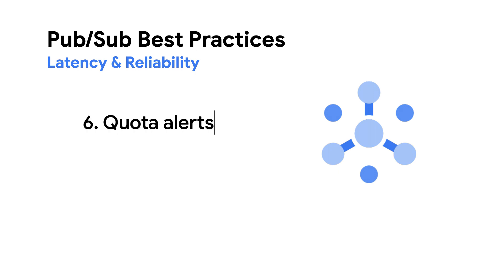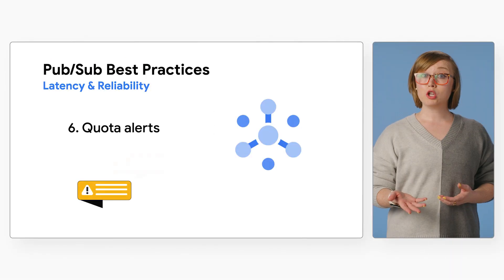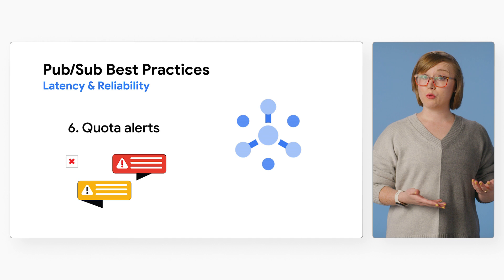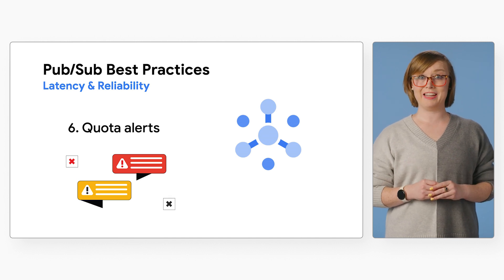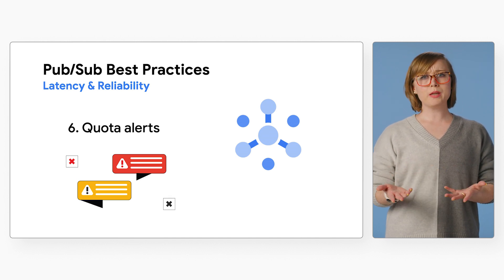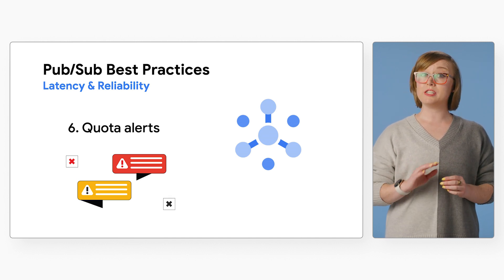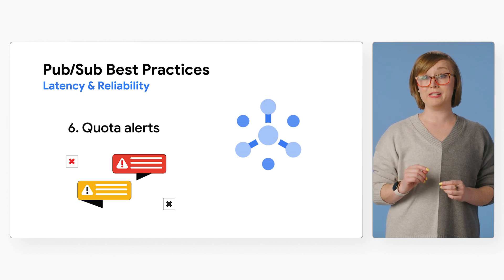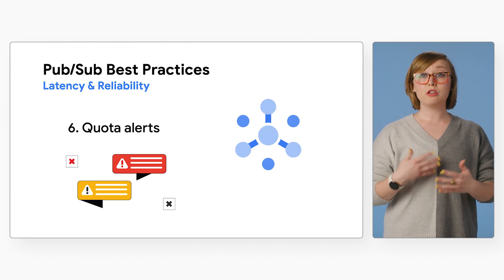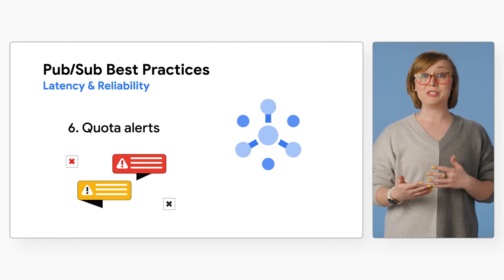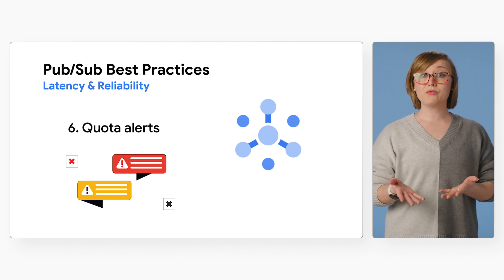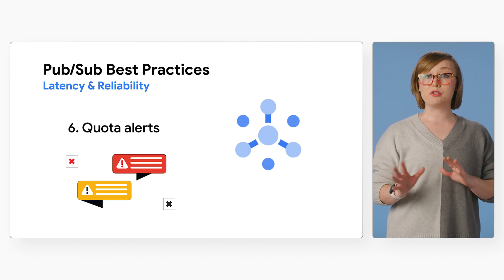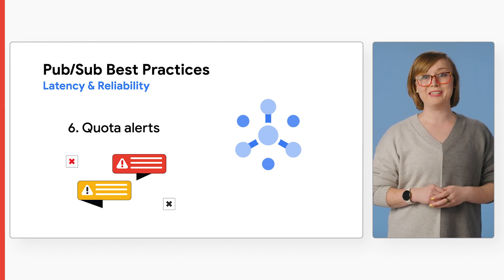Number six: quota alerts. Set up alerts on your PubSub quotas so you don't run into quota limits unexpectedly. If you anticipate your usage exceeding the default quota limits, create alerting policies for all the relevant quotas. These alerts fire when your usage reaches some fraction of the limit.